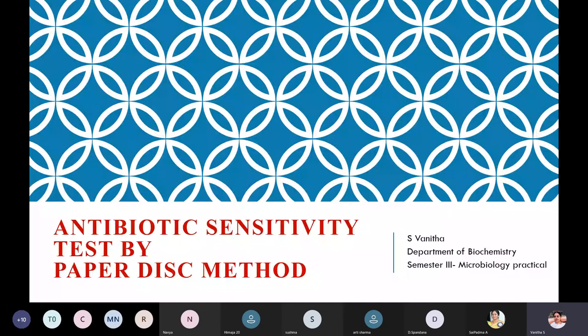The experiment for today is antibiotic sensitivity test by paper disc method. There are two different methods: the tube dilution method and the paper disc method. Paper disc method is easy, comfortable, and gives very good reliable results. So the most preferable method to determine the antibiotic sensitivity test is the paper disc method.